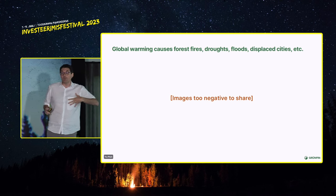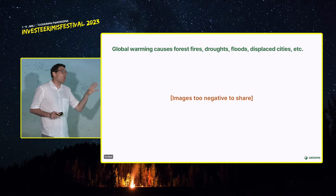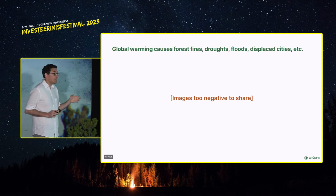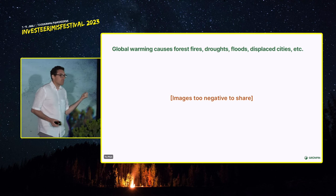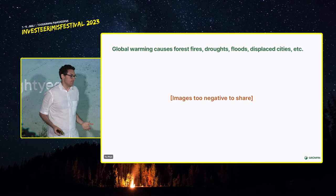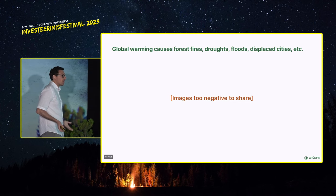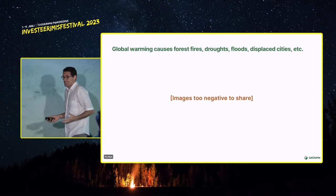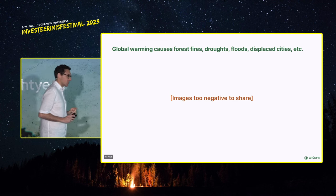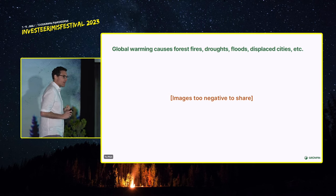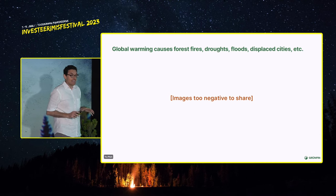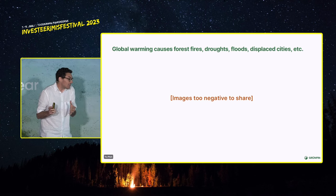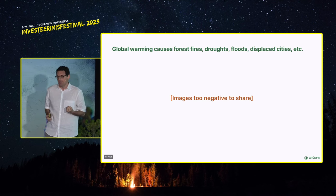So why is this a problem? I'm not going to share negative images with you — I told you the worst part of my presentation was my Estonian. But global warming is causing major issues: forest fires — we love our forests here in Estonia — droughts where land you used to grow food can no longer support crops, rising water levels causing floods and displacing cities. There could be, by the middle of this century, over one billion climate refugees — people who will no longer be able to live in certain parts of the world. Think about the consequences of displacing one billion people by mid-century.